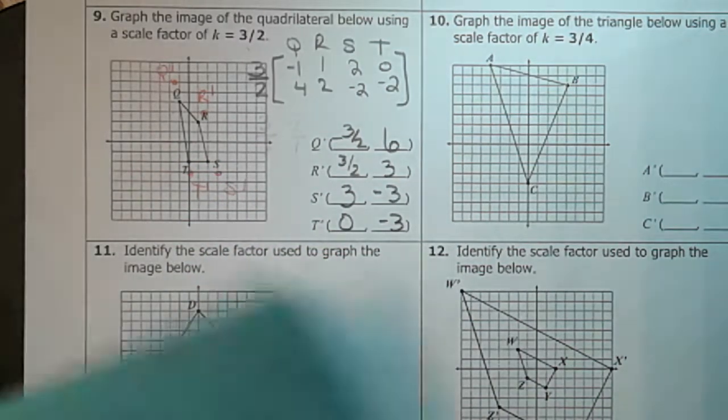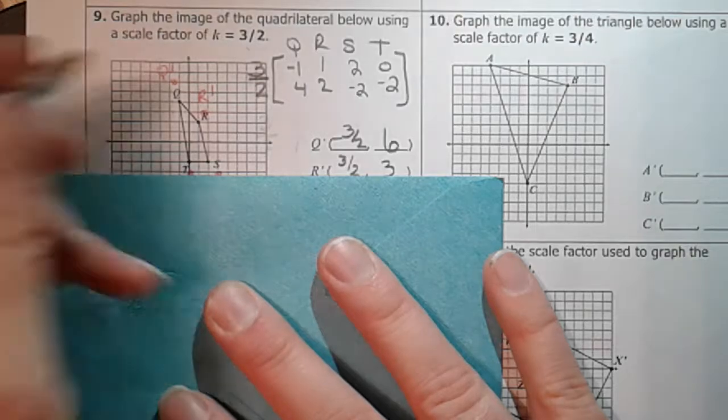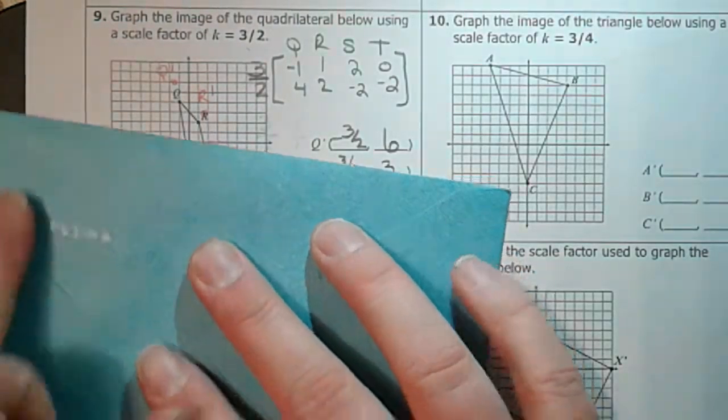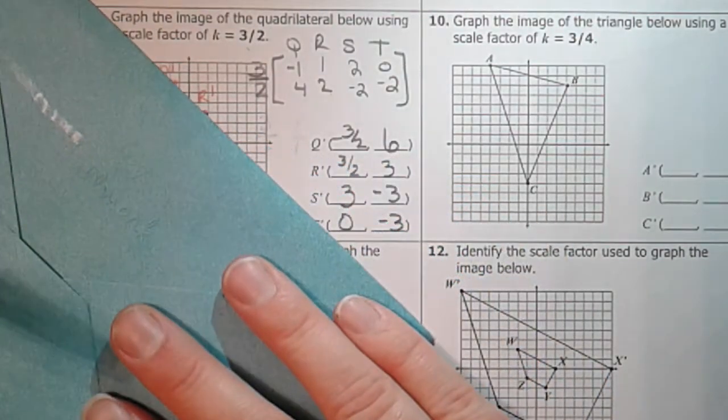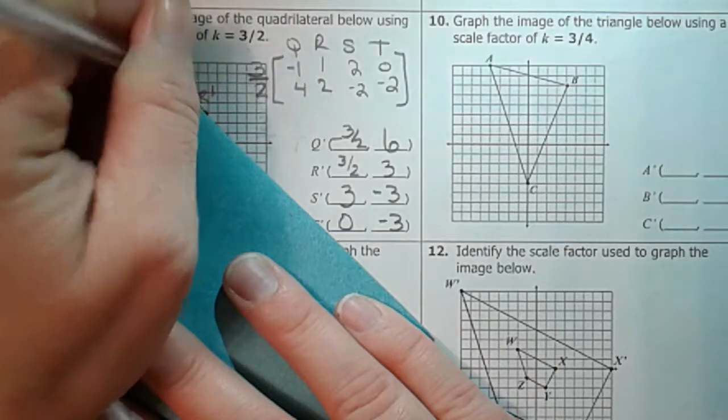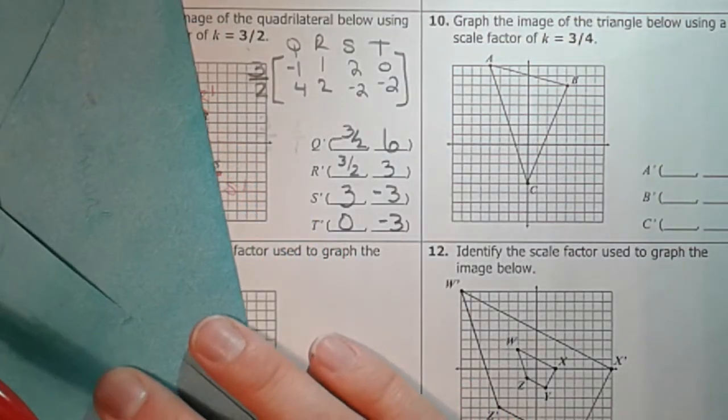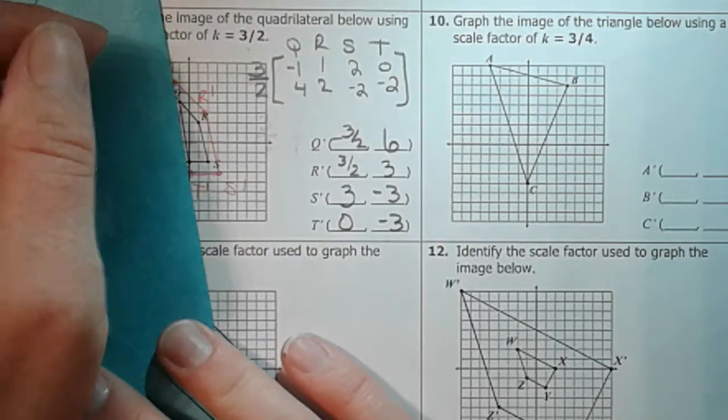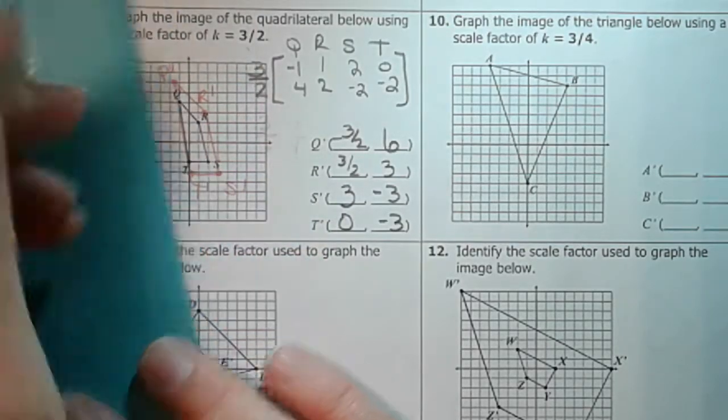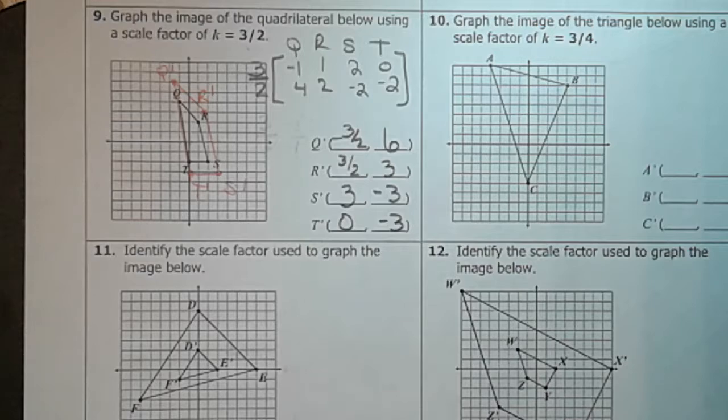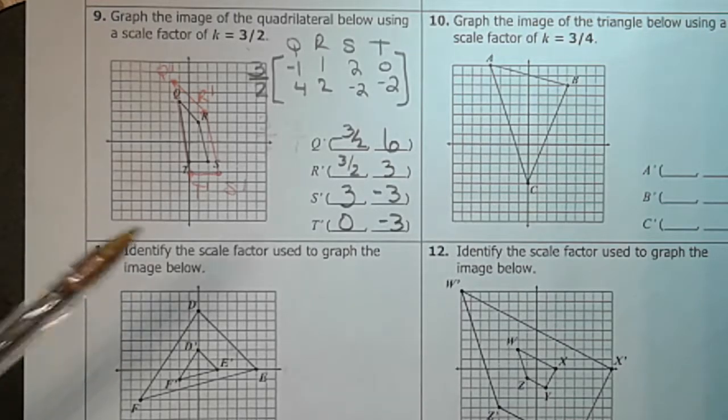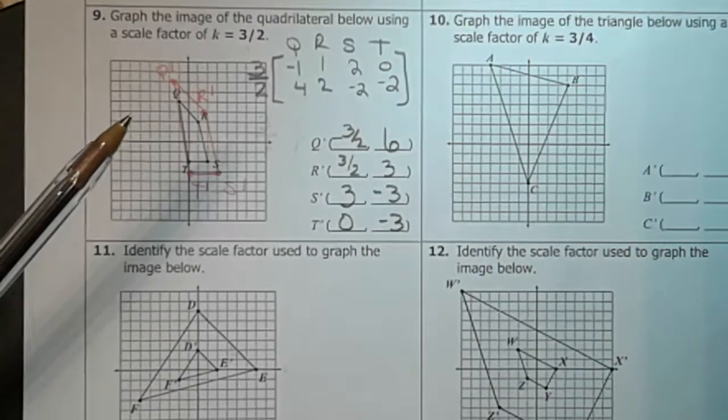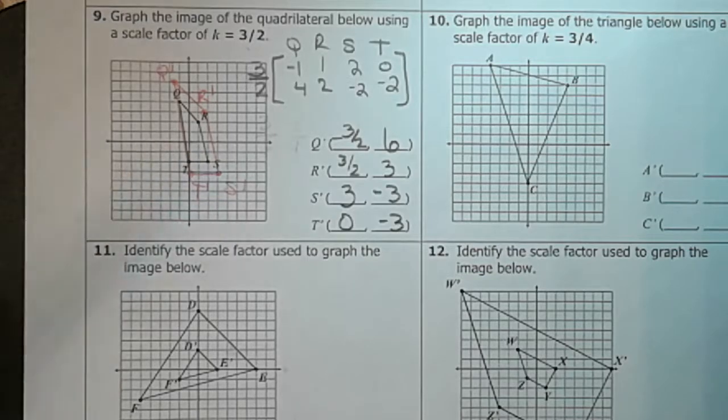S prime and T prime. All right, grab whatever straight edge you can find and connect your points. There you go. There is your new dilated figure. Your pre-image is the pencil and your image is the red.